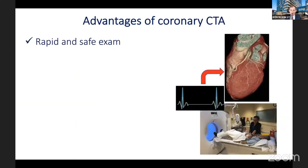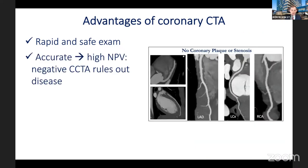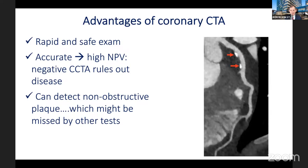CT has several important advantages. It is rapid and safe — we are not provoking ischemia. Sometimes beta-blockers are given to slow heart rate and nitroglycerin to dilate the coronaries. The scan acquisition itself takes under a second. The test is highly accurate, with a high negative predictive value. CT also has good positive predictive value for detecting anatomical stenosis. Most importantly, CT can detect plaque that would be invisible with any other test.